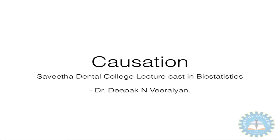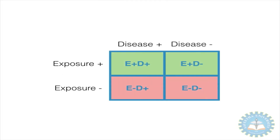Welcome to South Ardental College Lecture Cast on Biostatistics. This session we shall discuss statistics around causation — that is, to determine if an agent causes a disease or not. The possible outcomes in a causation study would be: diseased people with exposure, healthy people with exposure, diseased people without exposure, and healthy people without exposure.